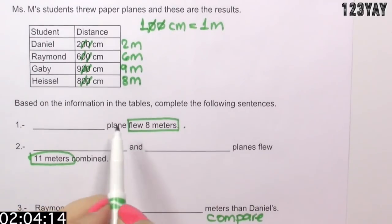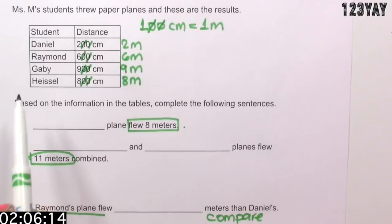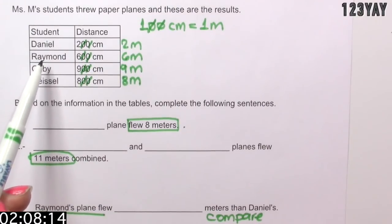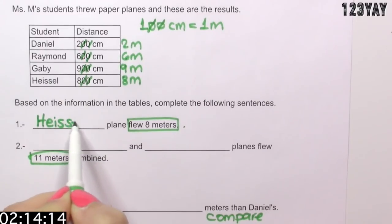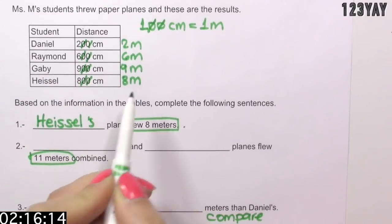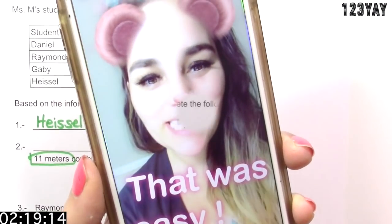Based on the information, we need to find a plane that flew 8 meters. This is not it. This is not it. This is not it. It's Hazel's because her plane flew 8 meters. Wow! That was easy.